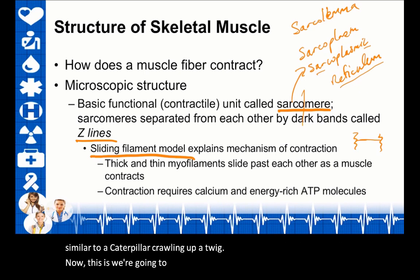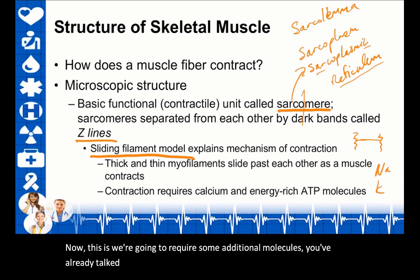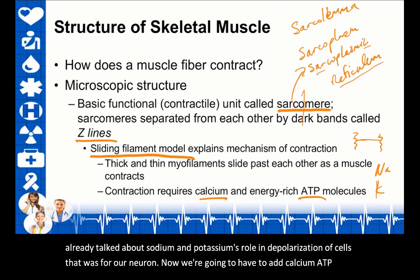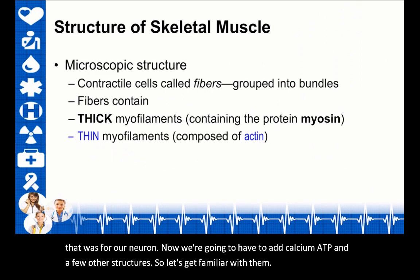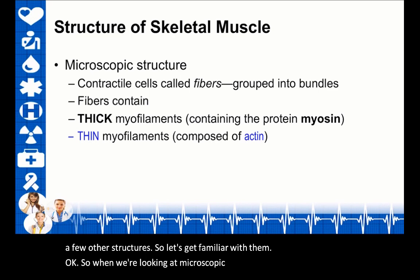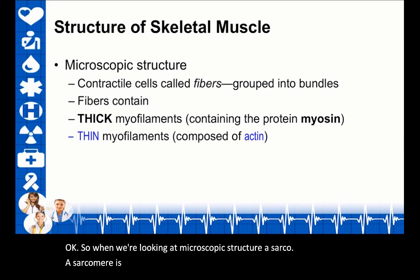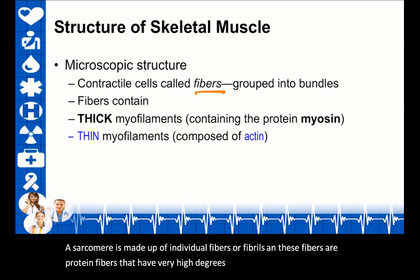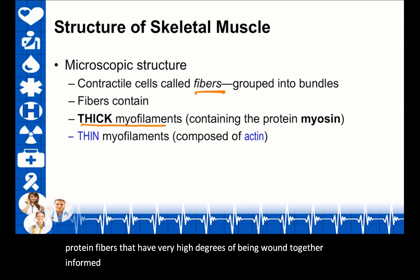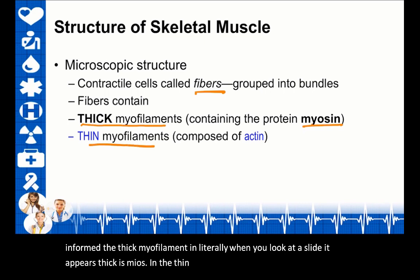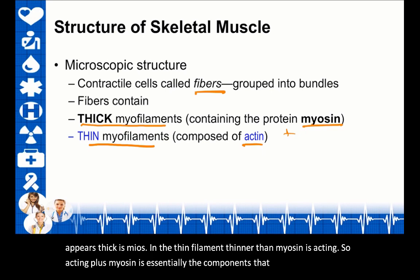The sliding filament model outlines how skeletal and cardiac muscle contract by having individual fibrils slide across each other, like a caterpillar crawling up a twig. This requires additional molecules beyond sodium and potassium—we add calcium, ATP, and a few other structures. At the microscopic level, a sarcomere is made up of individual protein fibers. The thick myofilament is myosin; the thin filament is actin. Actin plus myosin are the components that make sliding filament theory work.